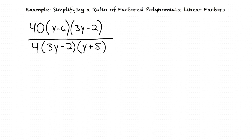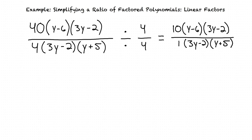We begin by simplifying the coefficients 40 and 4. We need to divide the numerator and denominator by the greatest common factor of these coefficients. In this case, the greatest common factor is 4, so we divide our expression by 4 over 4. Now we have 10 times (y minus 6) times (3y minus 2) divided by 1 times (3y minus 2) times (y plus 5).